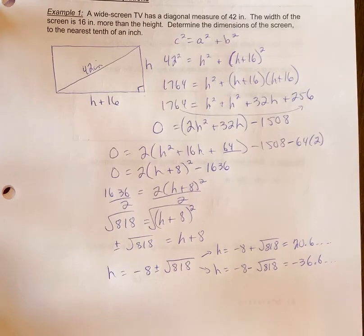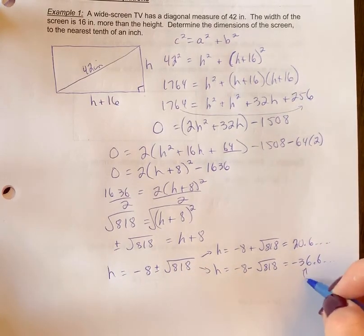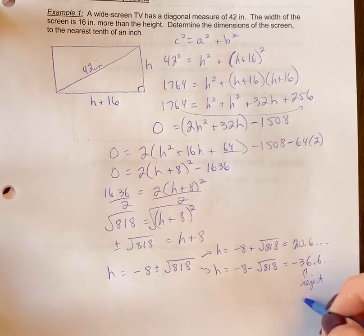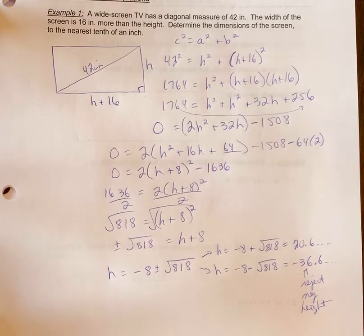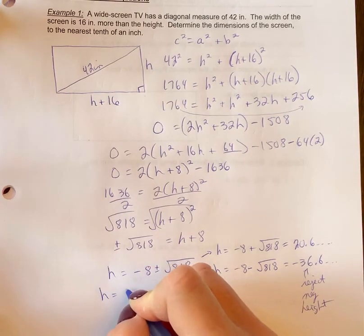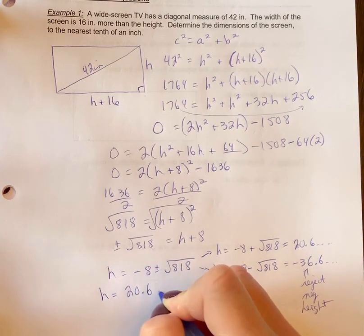Now in terms of what you're finding is h, this is the height. So you can't have a negative height. So you're going to reject negative height or just say reject is fine. So your height h is 20.6 inches.